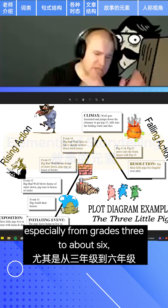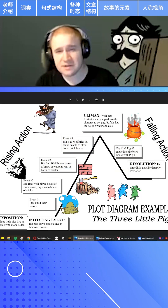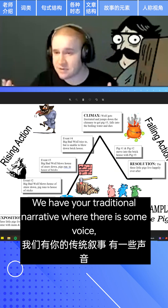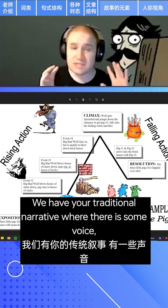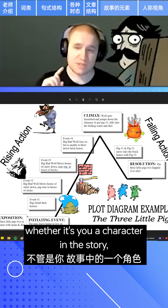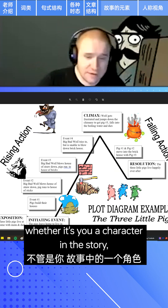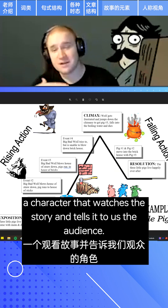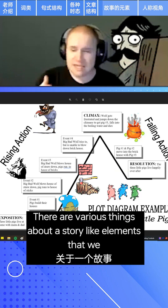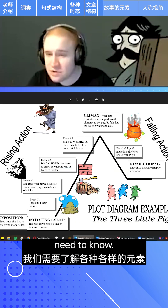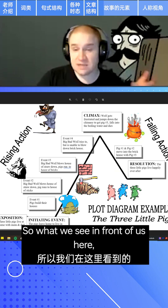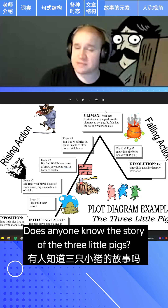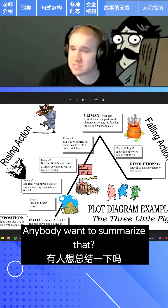We will do a lot of storytelling — this is an important thing to get used to, especially from grades three to about six or seven. There are various types of stories. We have your traditional narrative where there is some voice — somebody telling a story, whether it's you, a character in the story, or a character that watches and tells it to the audience. There are various elements of a story that we need to know, as you can see in front of us here.